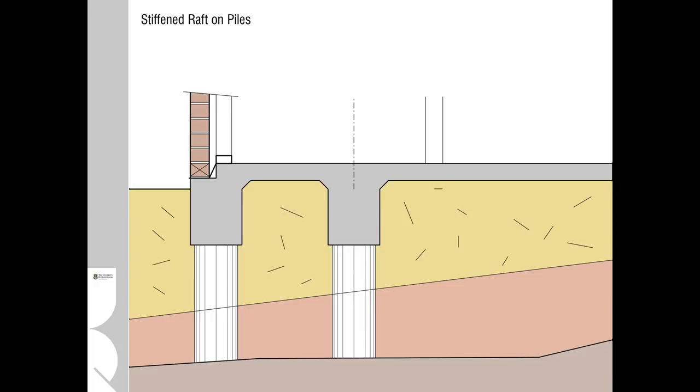The advantage of the stiffened raft is that in situations where we are on uncontrolled fill sites, we can combine the solution with a peered or piled site. So, we can introduce board piers which are concrete-filled columns that then go down to stable ground and then we cast our raft on top of that. This avoids any problems of subsistence of the uncontrolled fill site.